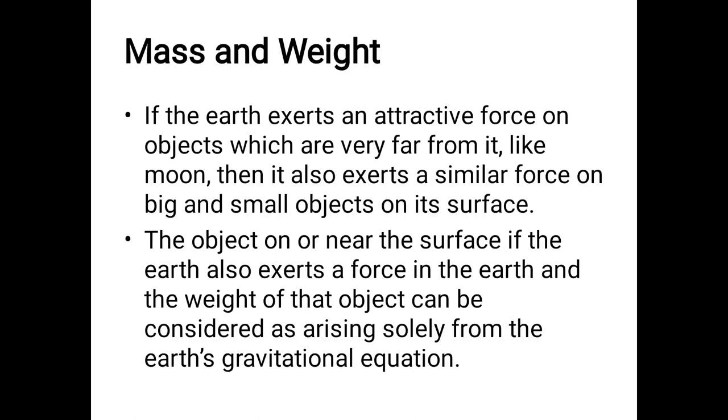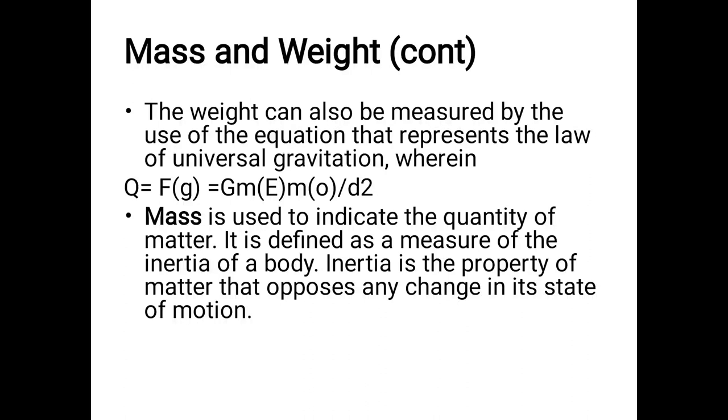Let's proceed now with mass and weight. What's the difference between the two? Remember that mass and weight are different, and both are affected by the Earth's gravitational force. Mass is used to indicate the quantity of matter—how many particles are there. When inertia affects the property or particle of that matter, we call it mass. Inertia is the property of matter to oppose movement or change in the state of motion.